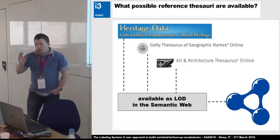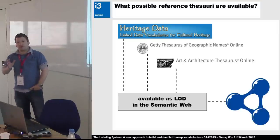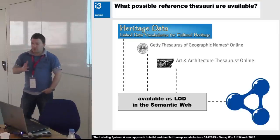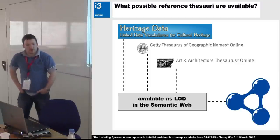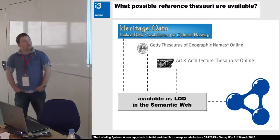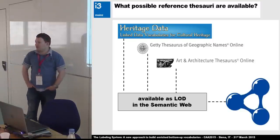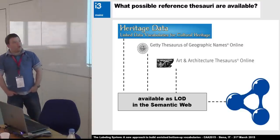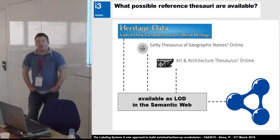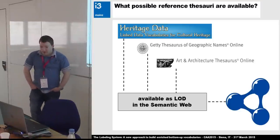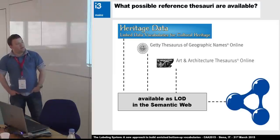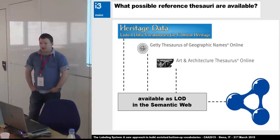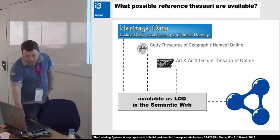One question that will come up: are there reference thesauri available on the web? Yes, there are — a lot. Some examples: English Heritage, the Getty AAT, the Getty TGN, and many more, especially in the natural sciences. They are all available as linked open data in the Semantic Web, modeled as RDF, so we can use them in the linked data cloud.